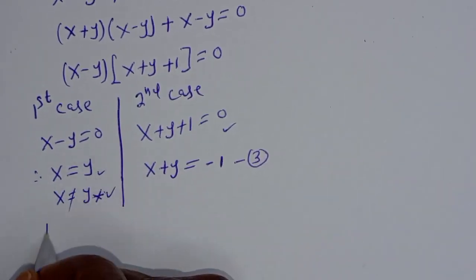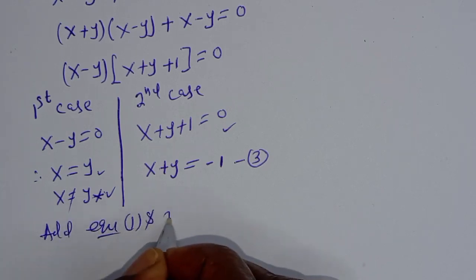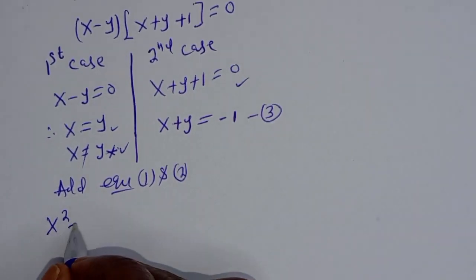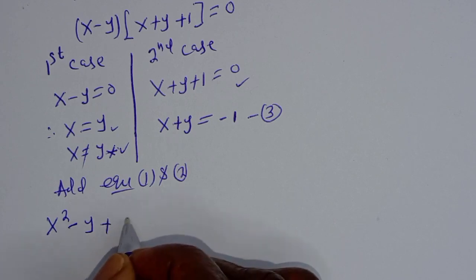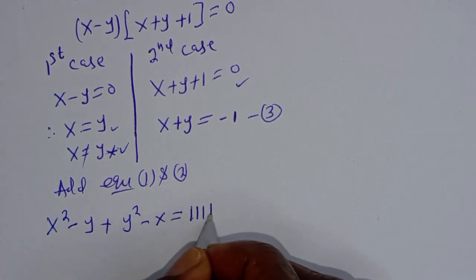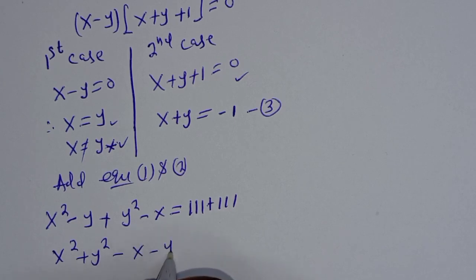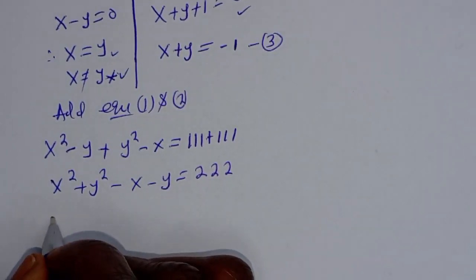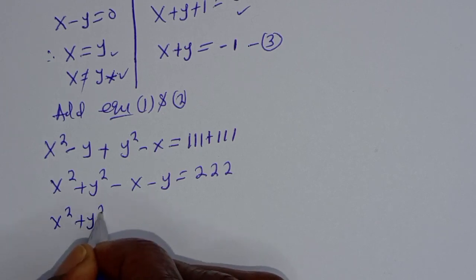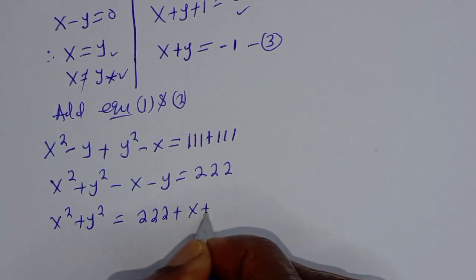Now let's add equation 1 and equation 2 together. x squared minus y plus y squared minus x is equal to 111 plus 111. So x squared plus y squared minus x minus y is equal to 222. Then x squared plus y squared is equal to 222 plus x plus y.